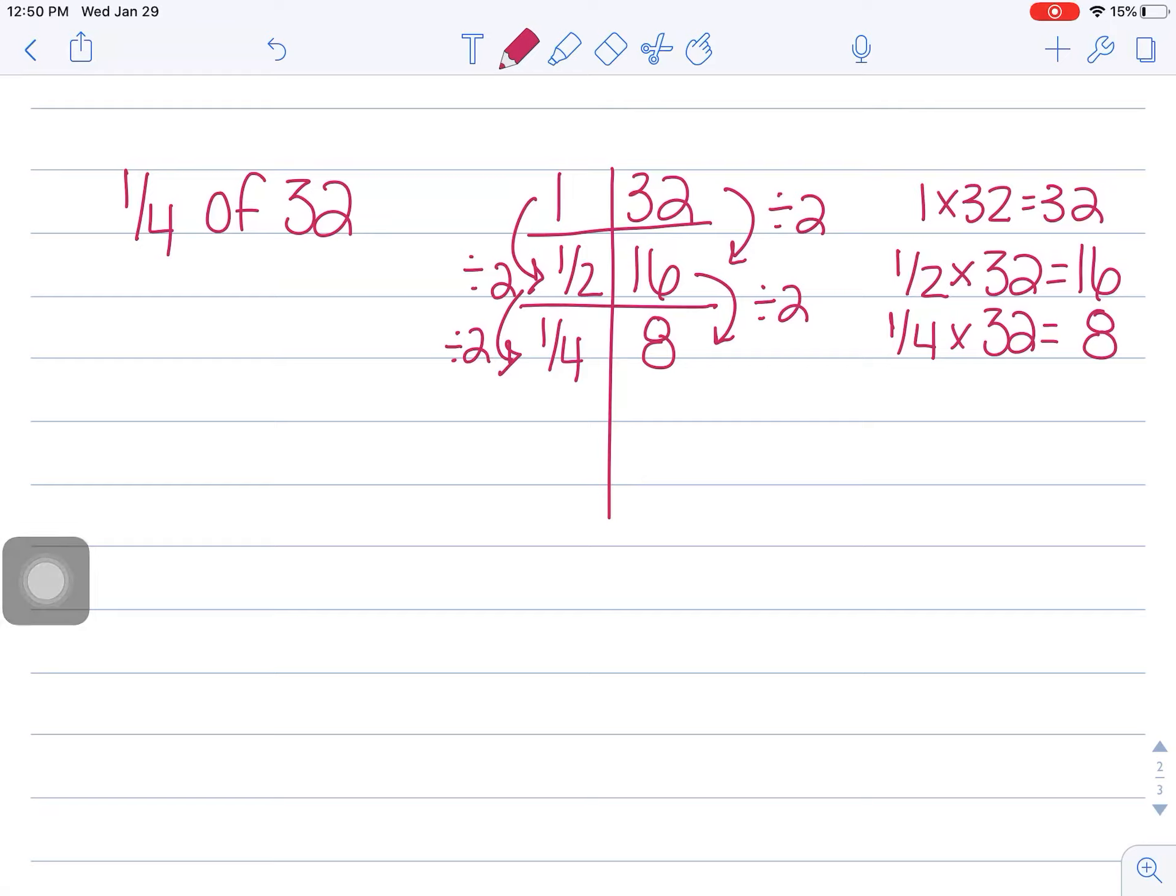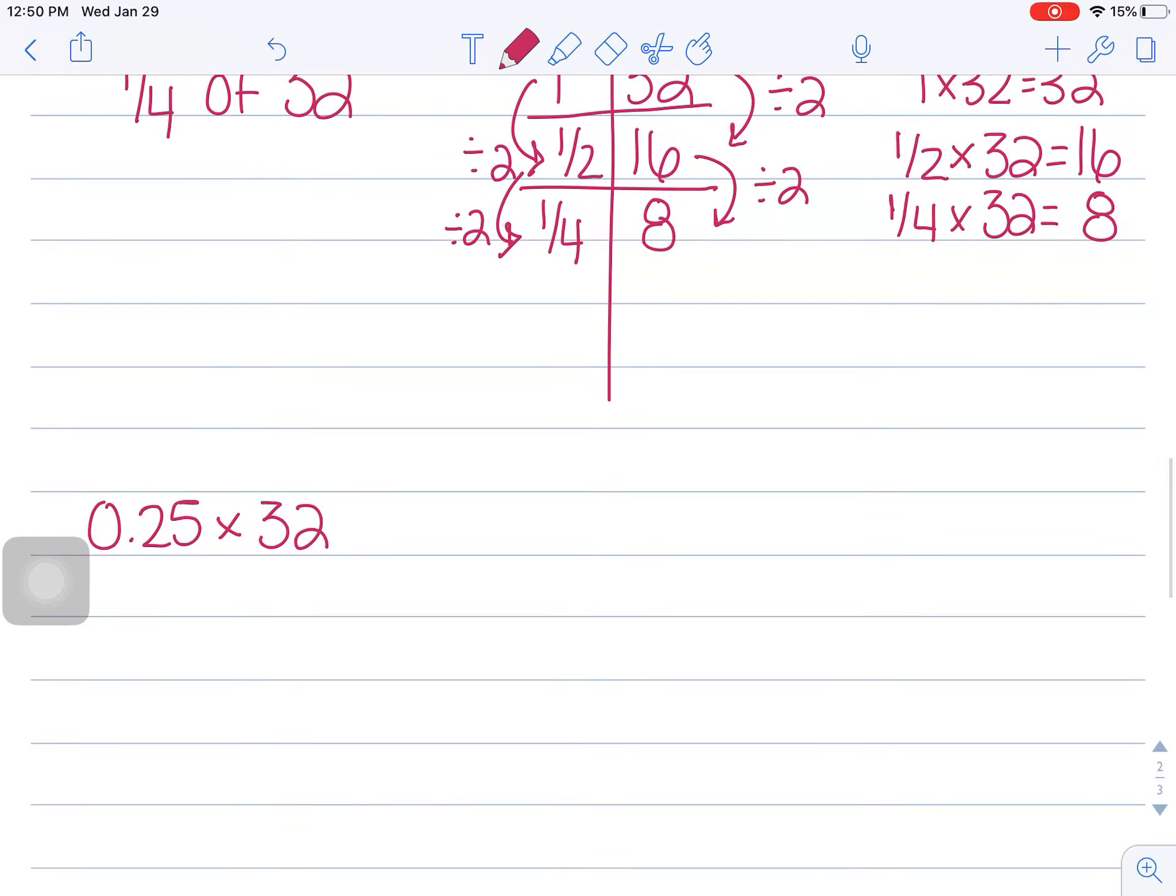Let's do one more problem. Let's do 0.25 times, you guessed it, 32. Again, this is a problem string. Remember, they kind of piggyback off each other. So this time what I want to do is I want you to think about the problem in terms of quarters, meaning money, because when I think of 0.25, I'm thinking of quarters.